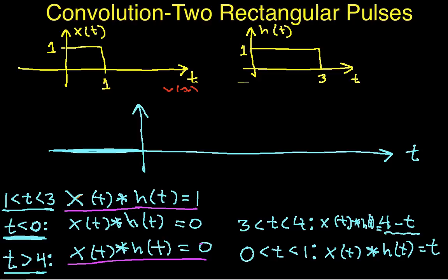Okay, between 0 and 1, that's this guy over here, we have that x convolved with h is equal to t. So if I'm graphing t between 0 and 1, it's just a line with slope 1.